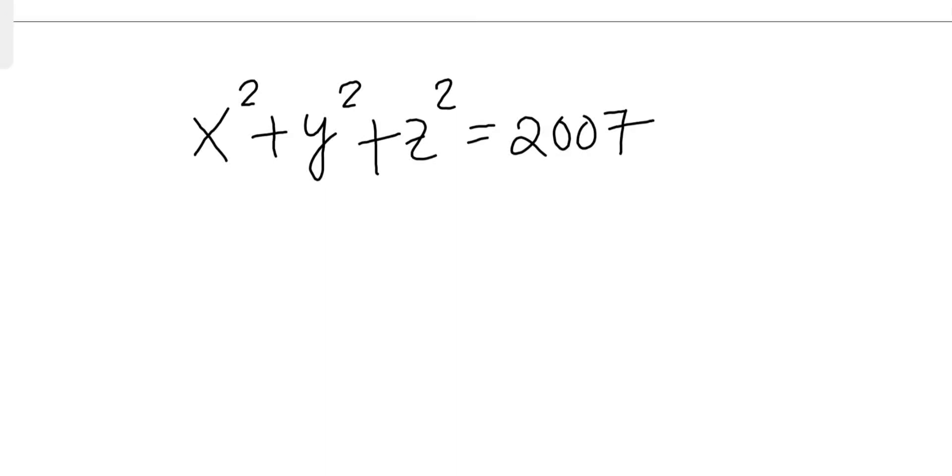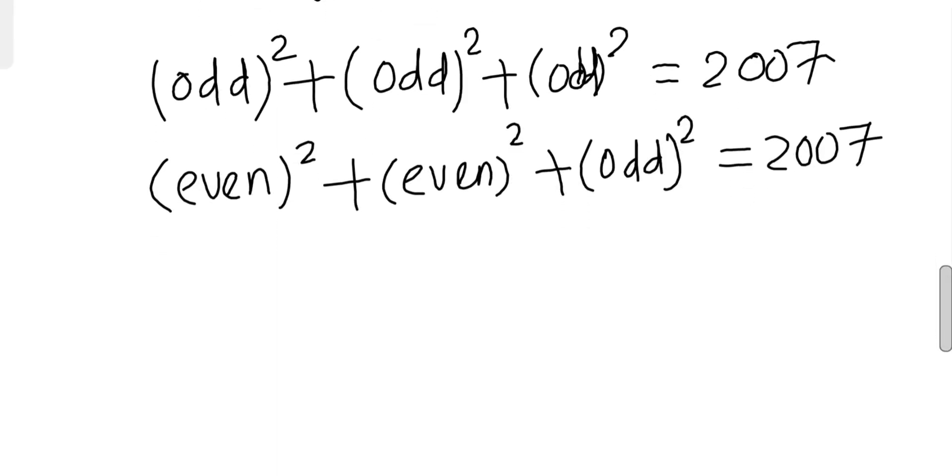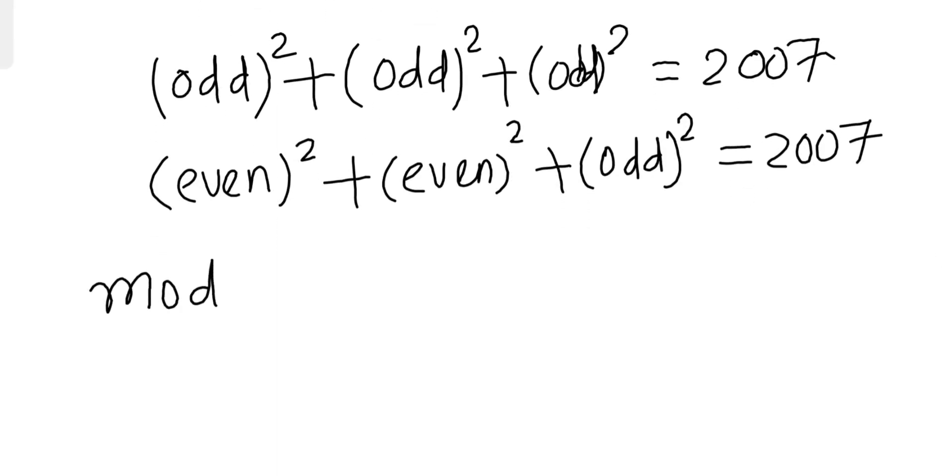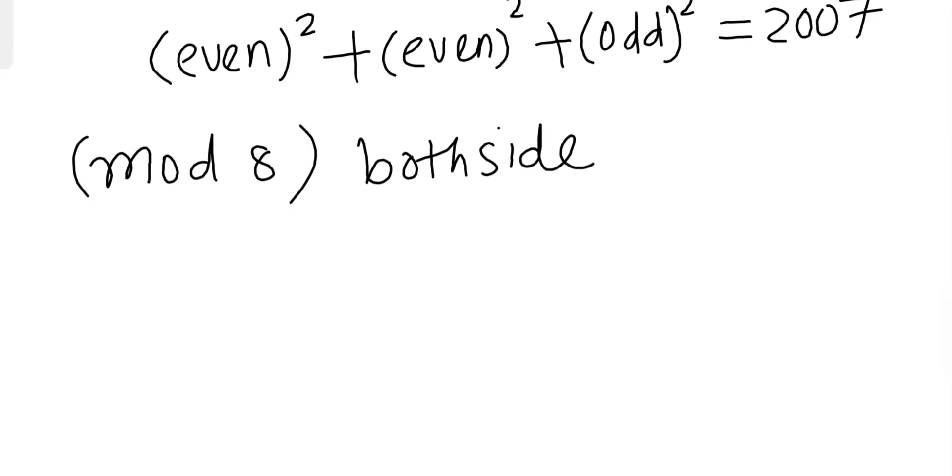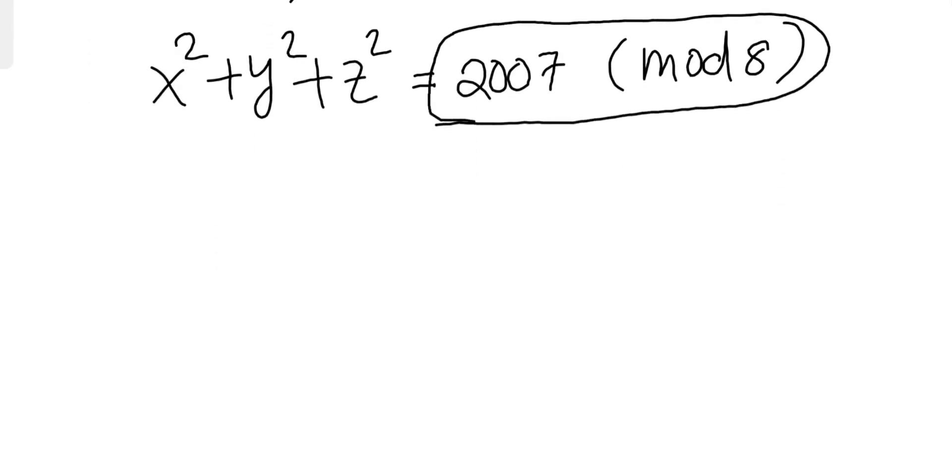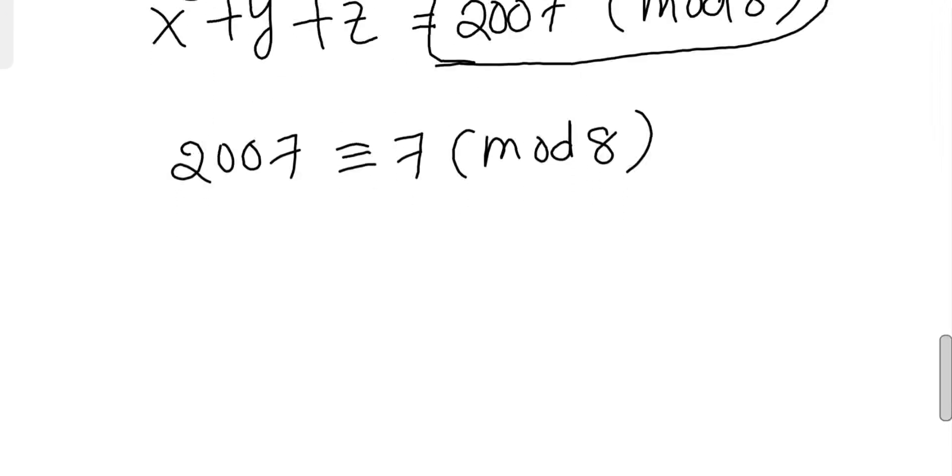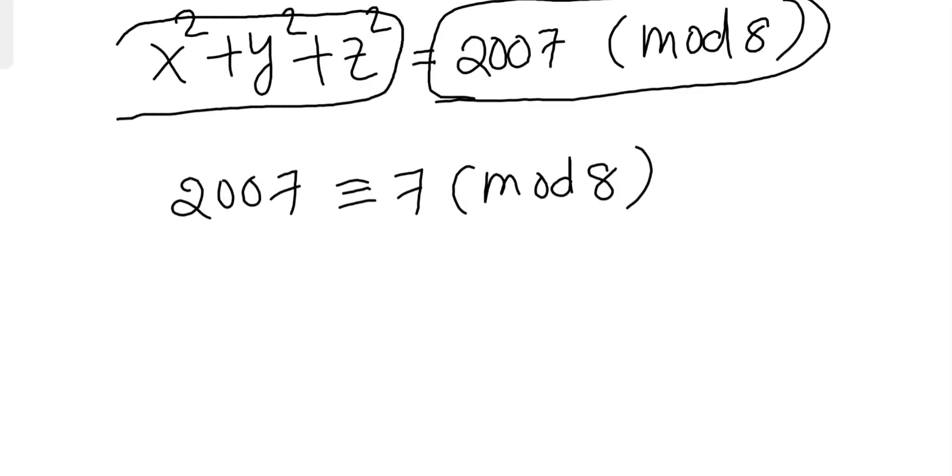Before going to solve this question, first let's do some parity analysis. Then you will see that the combination of numbers can be so realistic. Take mod 8 both sides. What we'll get is x² + y² + z² ≡ 2007 (mod 8). So right-hand side when we take 2007 mod 8, 2007 equals 7 mod 8. So RHS is 7 mod 8. Then this side must be 7 mod 8 in order to have integer solutions.